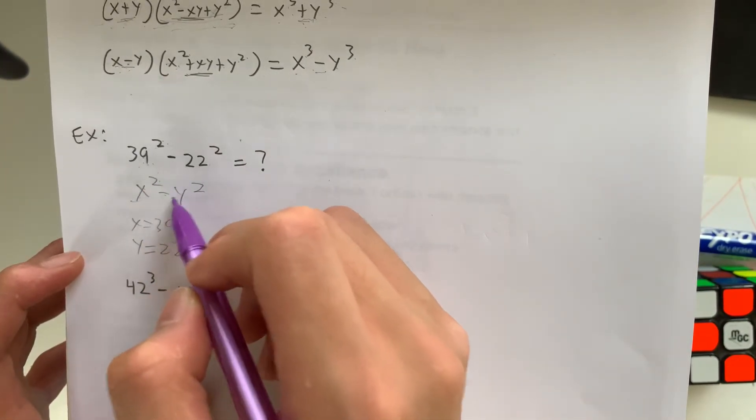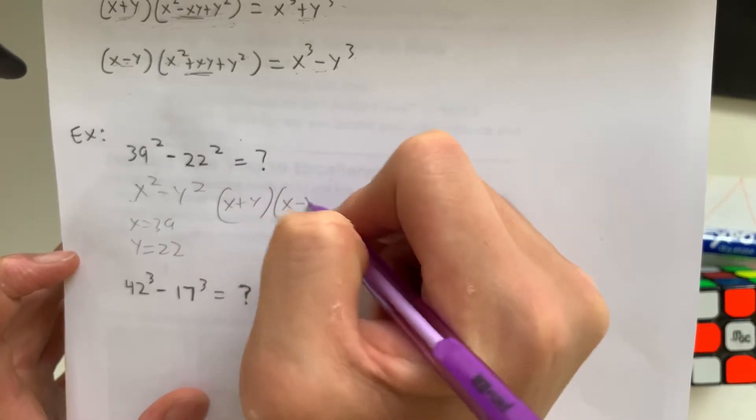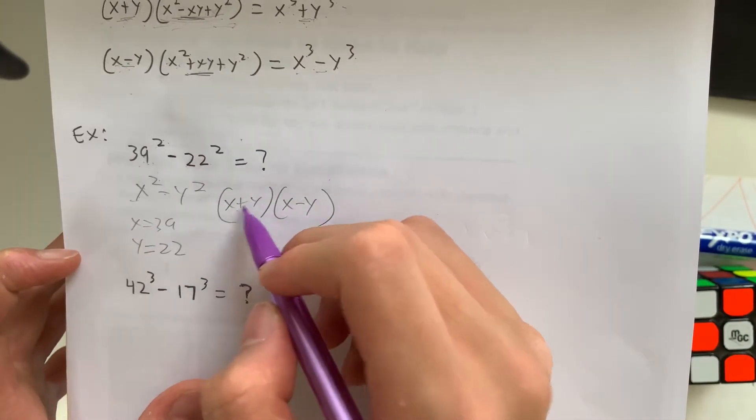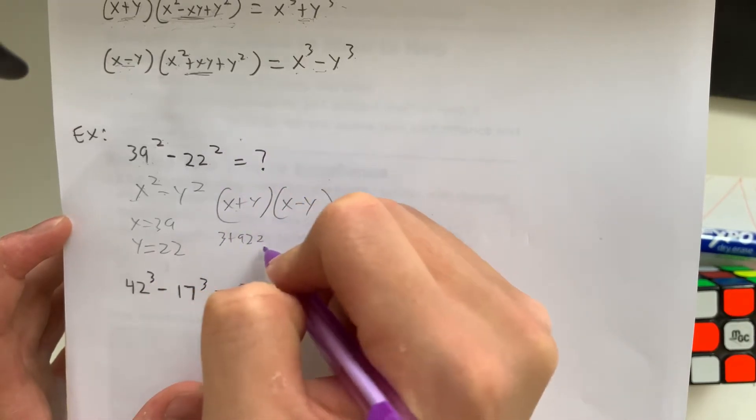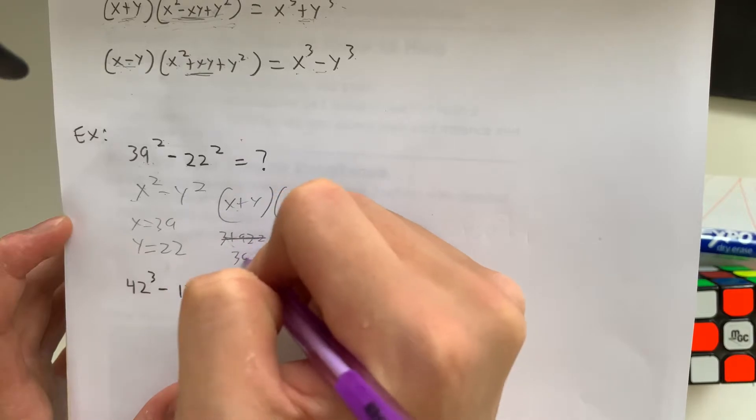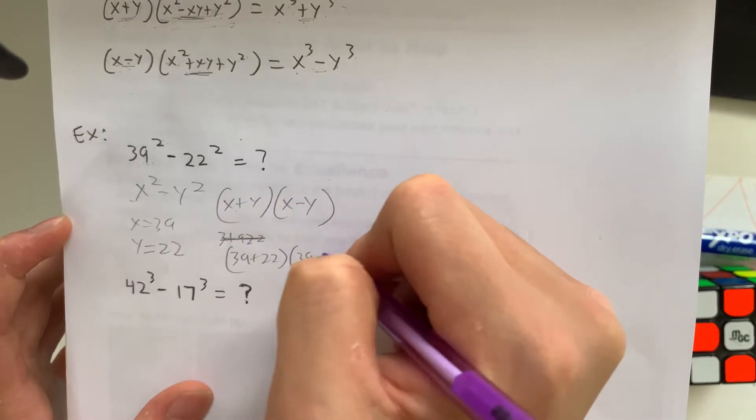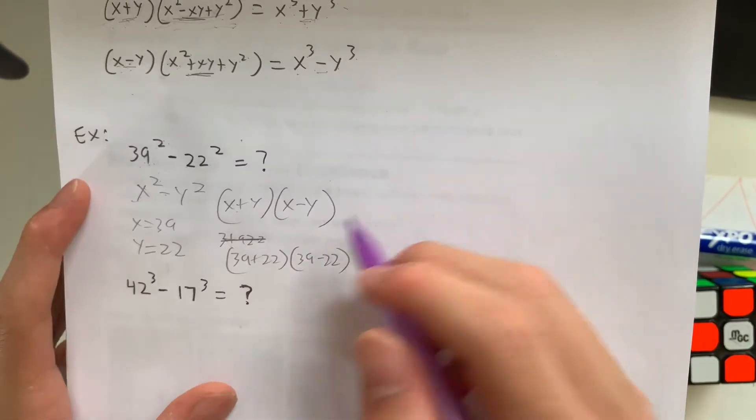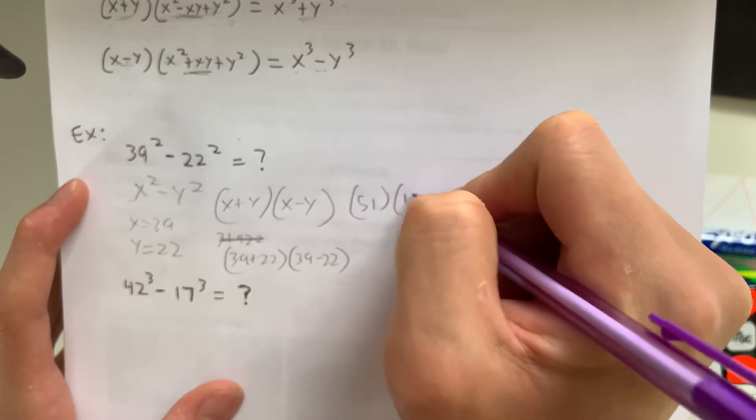And what is x squared minus y squared? It's equal to x plus y times x minus y. So what is x plus y? It's equal to 39 plus 22 times 39 minus 22, which equals 51 times 17.